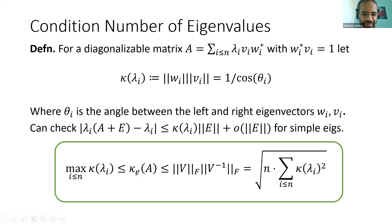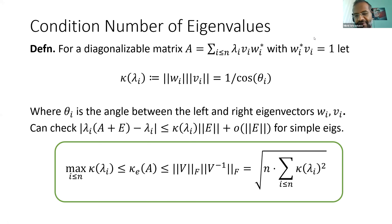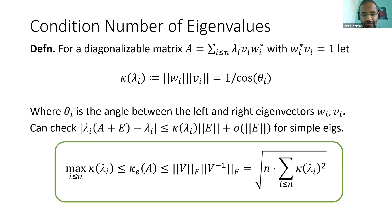So the eigenvalue condition number is a more refined quantity, polynomially related to the eigenvector condition number we ultimately care about. Now let me state Theorem B, the probabilistic result that implies Theorem A. Suppose you have a complex matrix of norm bounded by one, and let G be a matrix with i.i.d. complex standard Gaussian entries. You look at A + γG where γ is a small parameter — this is a random matrix, and with probability one it has n distinct eigenvalues λ_1 through λ_n.